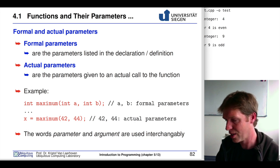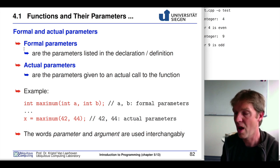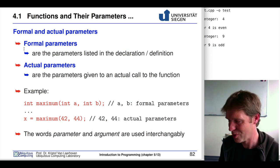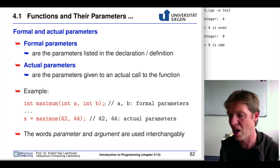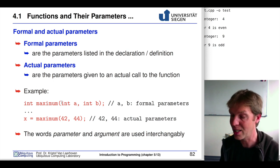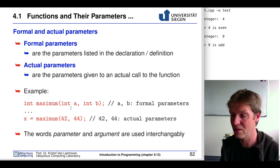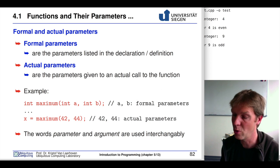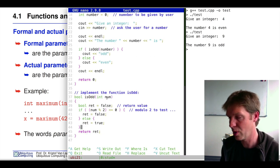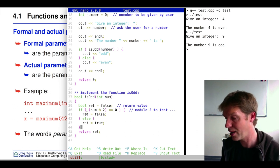This brings us to formal parameters. Formal parameters are the ones in the definition. So if we say we expect an integer and call it a in the function, and another integer we call b, those are the formal parameters. Here with num: this num is a formal parameter that we can use within the definition of our function.